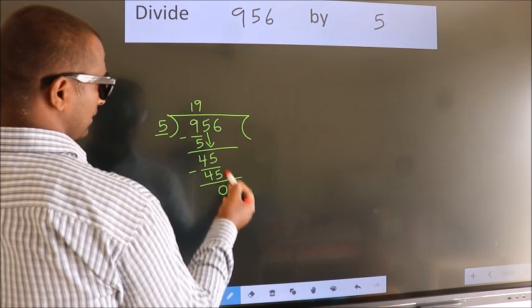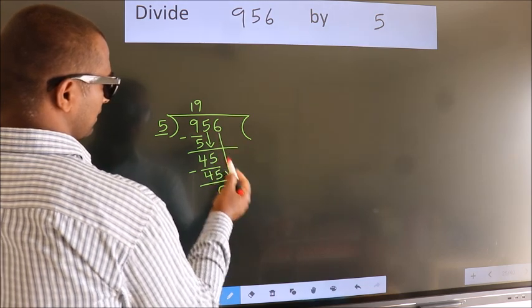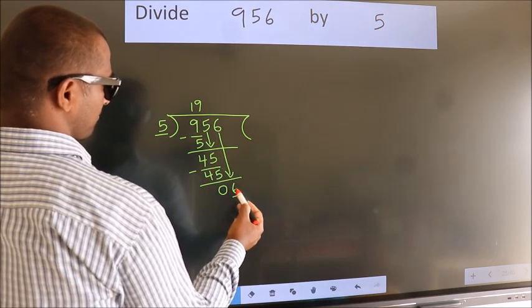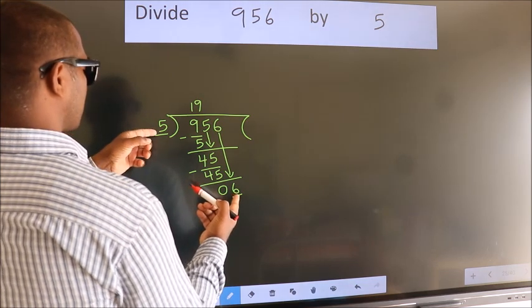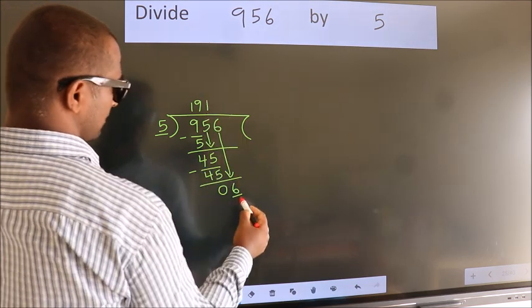After this, bring down the next number. So, 6 down. So, 6. A number close to 6 in the 5 times table is 5 once, which is 5.